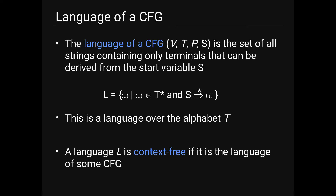The language of a CFG (V, T, P, S) is the set of all strings containing only terminals that can be derived from the start variable S: L = {w | w ∈ T* and S →* w}. This is a language over alphabet T. A language L is context-free if it is the language of some context-free grammar.